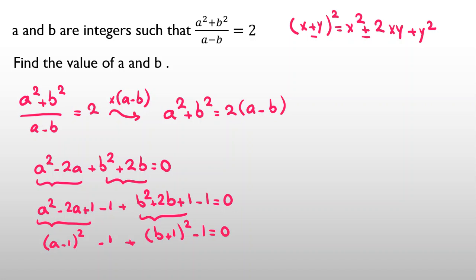We can take two negative ones to right hand side. It will be plus 2. So a minus 1 squared plus b plus 1 squared equals 2.